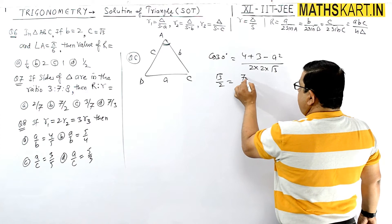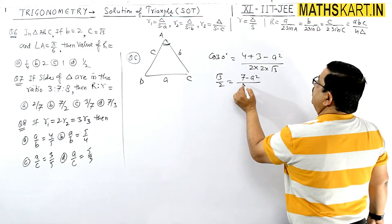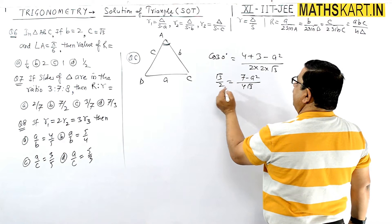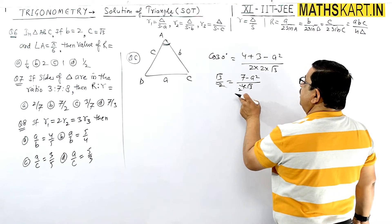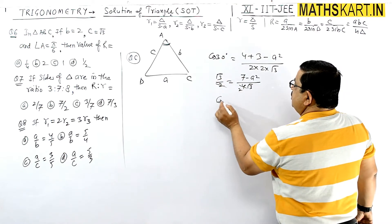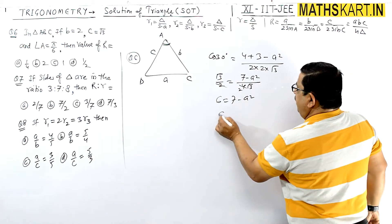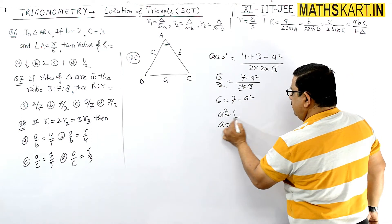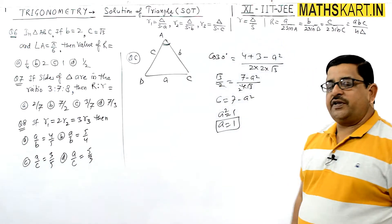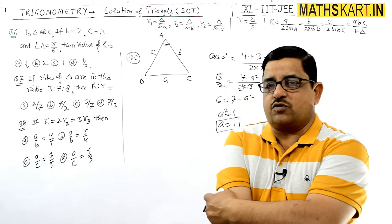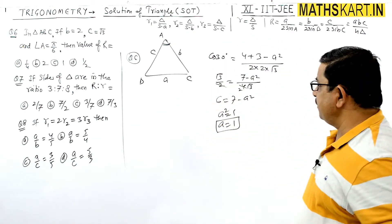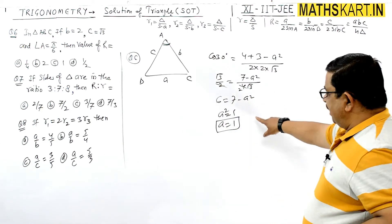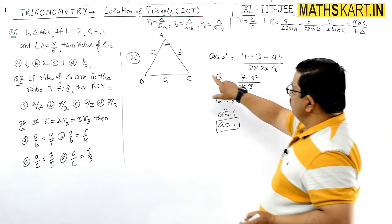cos 30° = √3/2 = (7 - a²) / 4√3, so 6 = 7 - a², giving a² = 1, and a = 1. Side length को positive ही लिखना है — a minus नहीं हो सकता, length always positive होती है।